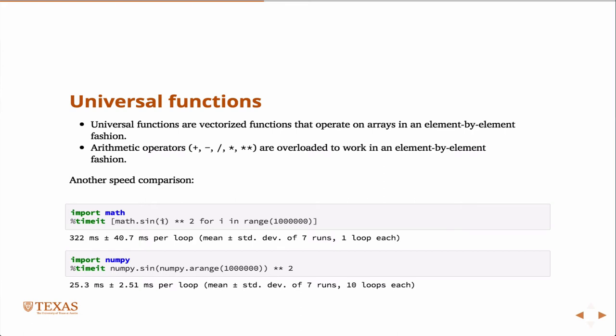So if I then call sign, the sign of one, the sign of two, the sign of three, and I square that every time, all the way to a million, create that list, then you see 322 milliseconds versus the same operation in NumPy.